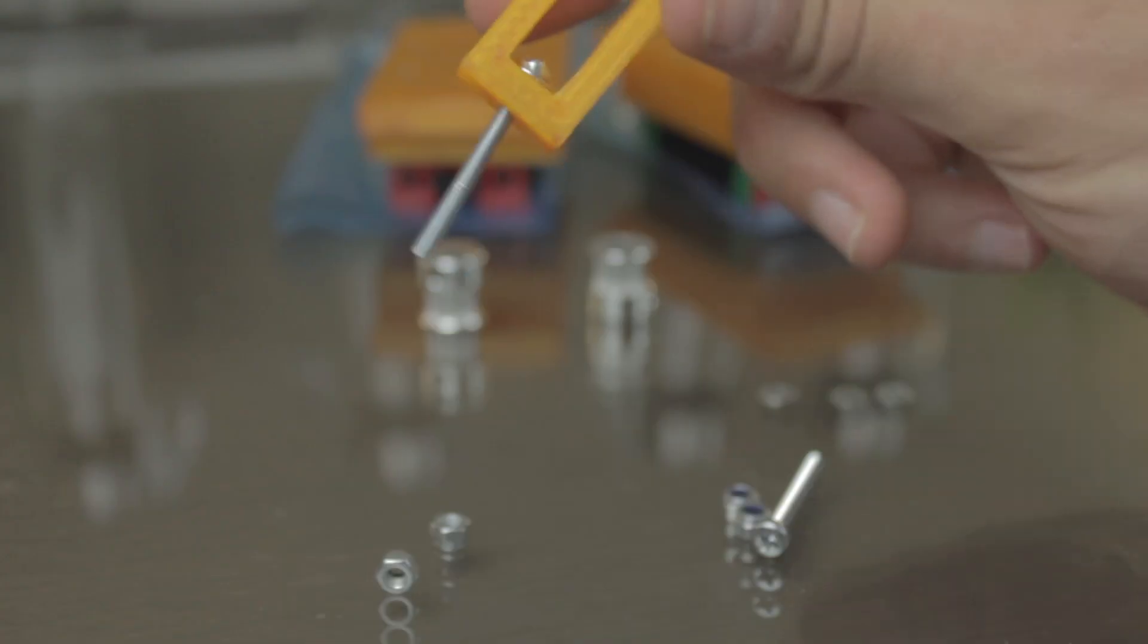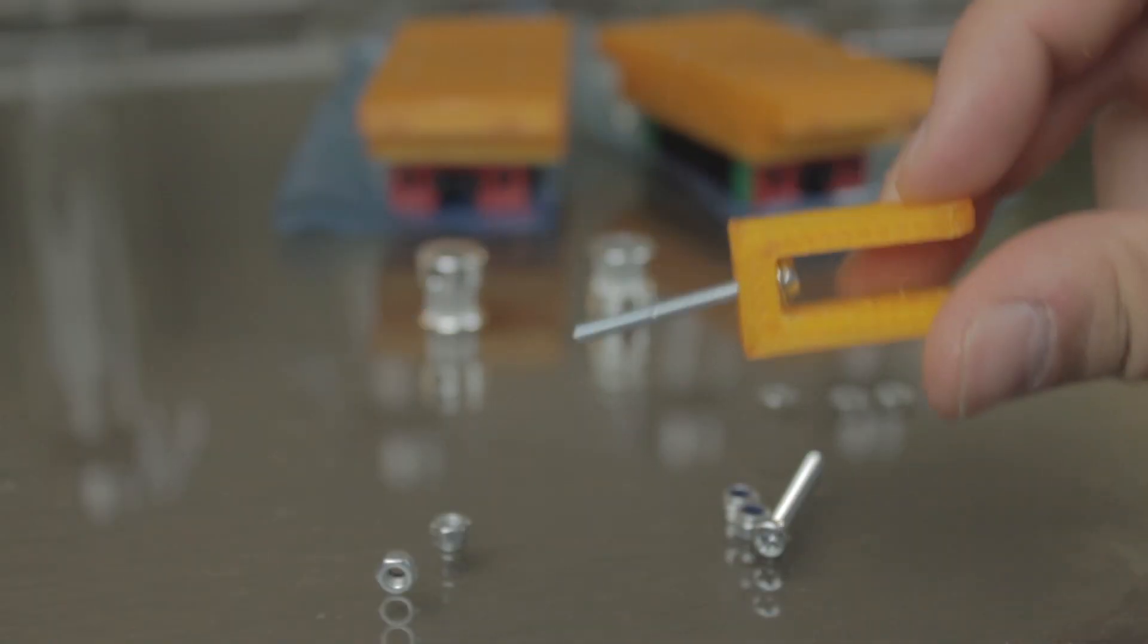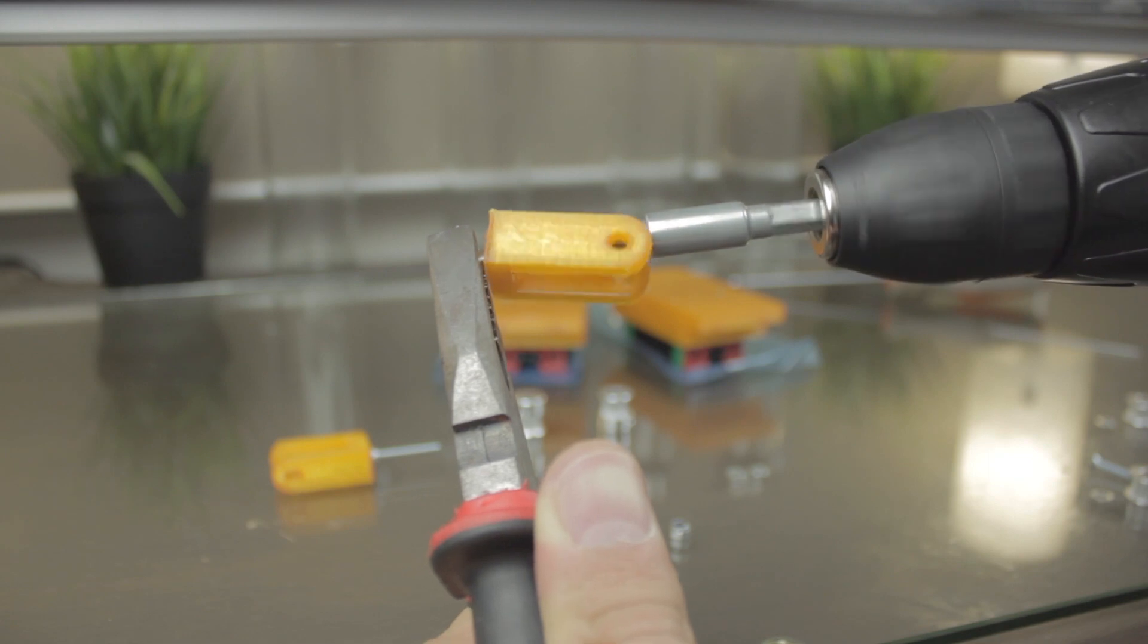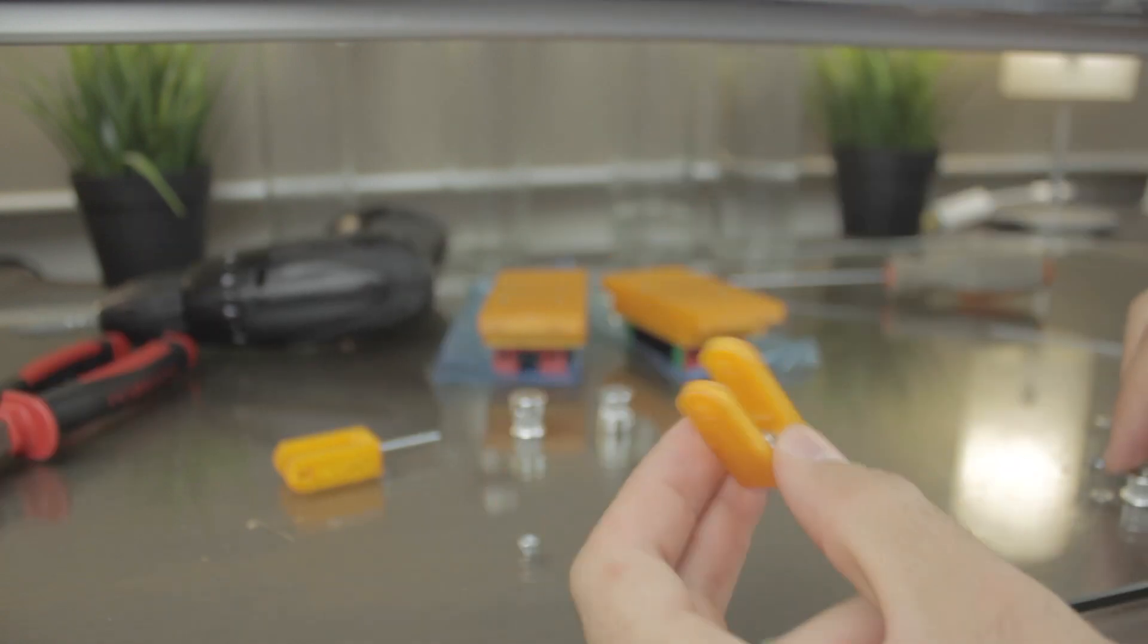To assemble it, we'll pick up a 40mm M3 bolt and we'll insert an M3 washer on it. Then we'll put it inside the 3D printed tensioner bracket and we'll tighten an M3 Nylok nut all the way through like so. Now we'll just do the same with the other 3D printed tensioner bracket.